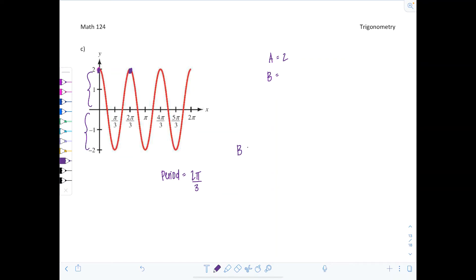Well, I know B is equal to 2 pi divided by the period. So 2 pi over 2 pi over 3, which is equal to 3. So B is 3. So now when I write the equation, I have y equals 2 cosine 3x.